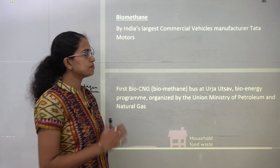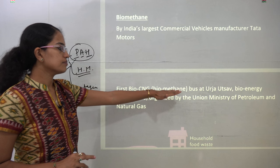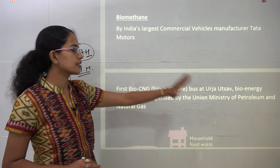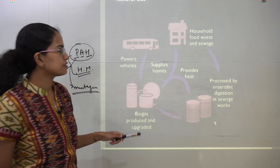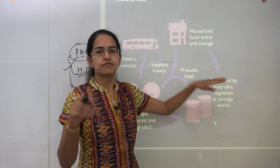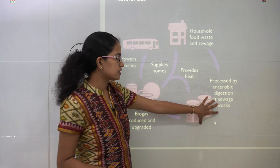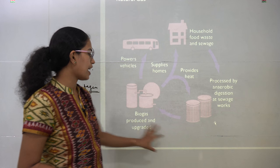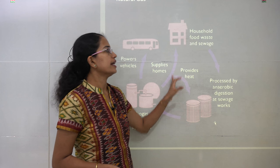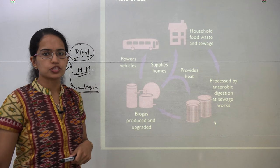The next topic is biomethane. A bio-CNG bus has been brought about with biomethane as its active ingredient, first released by Tata Motors at the Urja Utsav. From household waste, anaerobic digestion takes place in the absence of oxygen, producing biogas. This biogas provides energy to the process as well as to households and powers various vehicles. Biomethane is a new substitute we are looking forward to.